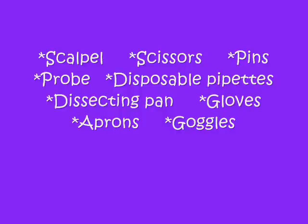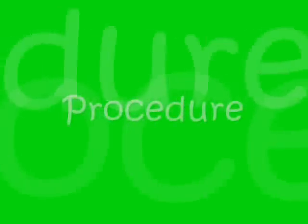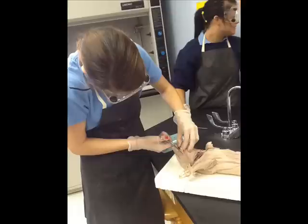The materials we will use are a scalpel, scissors, pins, a probe, disposable pipettes, a dissecting pan, gloves, aprons, and goggles. For the oral cavity, insert a sturdy pair of scissors into one corner of the specimen's mouth and cut posteriorly. Repeat on the opposite side.